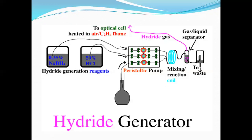This is the diagram of the hydride generator system. The hydride generation reagents used are 0.35% NaBH4 (sodium borohydride) and 50% HCl. This is an important exam question: the reagents used in a hydride generation system are 0.35% NaBH4 and 50% HCl.